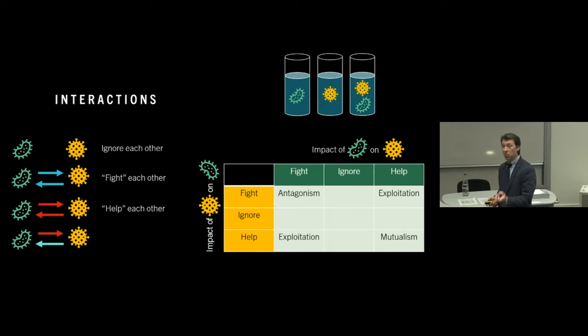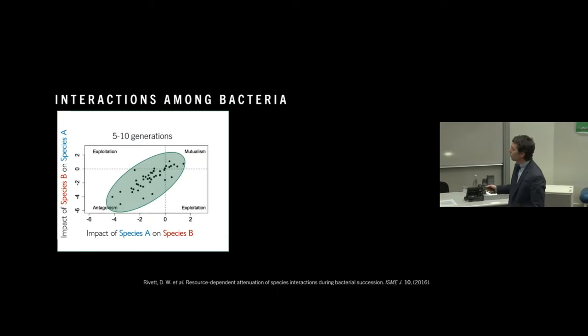And so one of the things that we've been doing a lot of is trying to understand how these interactions come about, how they evolve, how they change over time, and what they look like in these tree-hole environments. And so we've done experiments where we've actually looked at how, looked at the impacts of different species combinations. So here we have, on the x-axis, the impact of one bacterial species on another. Zero means that they're ignoring each other. Increasingly negative means that species A has increasingly slowing, inhibiting species B, whereas a positive number means that it's helping species B. And on the y-axis, we have the reverse. So the impact of species B on species A.